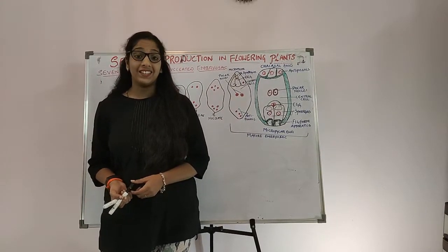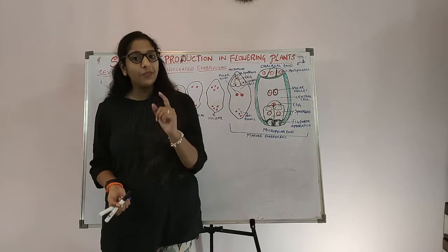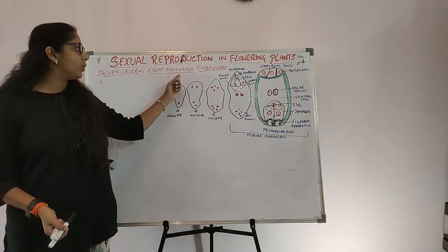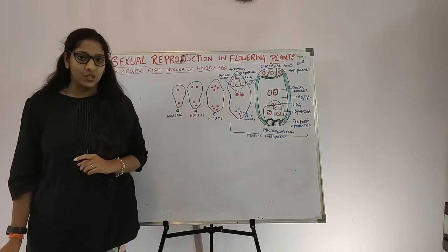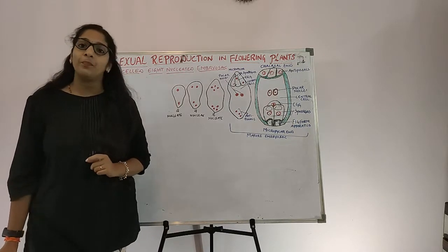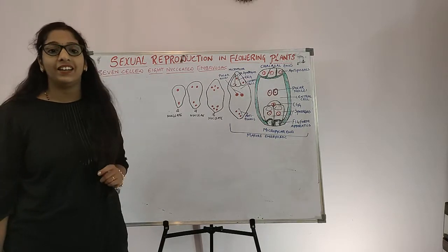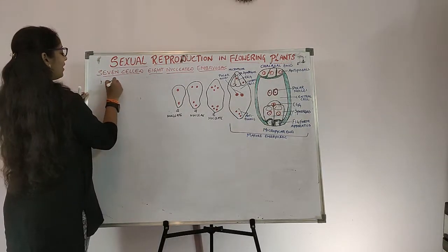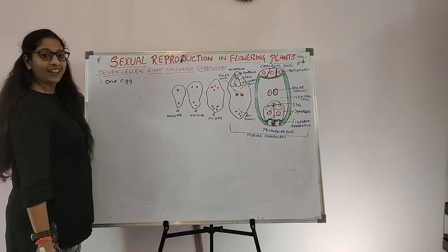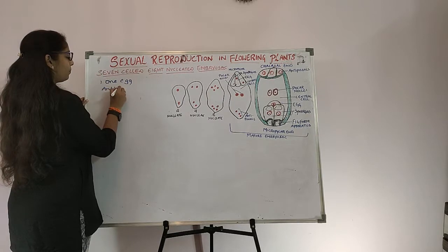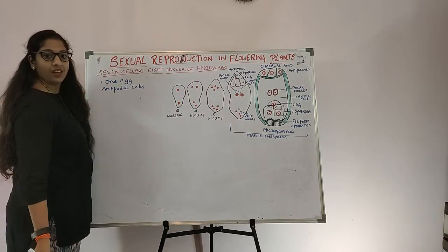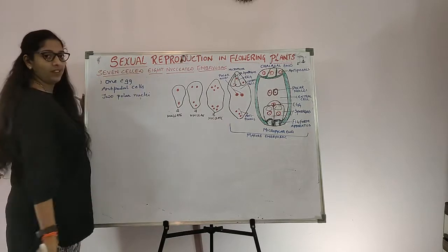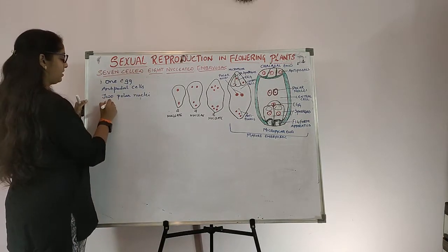Welcome back, dear students. In this class let us learn another 5-marks important question, and that is the 7-cell, 8-nucleated embryo sac — or simply, explain the structure of the embryo sac. This embryo sac consists of 1 egg cell, antipodal cells, 2 polar nuclei, and synergids.